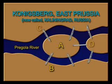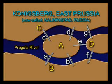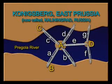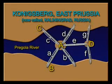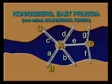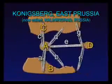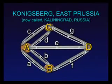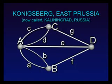Euler first named the islands, shores, and bridges. He then redrew the map with the islands A and D very small and with longer bridges — that doesn't really change the problem. Then he realized that the shores B and C could also be very small, again not changing the problem. Finally, Euler took the big step: he thought of the land areas A, B, C, and D as points, and the bridges A through G as lines — in this case arcs — connecting them.